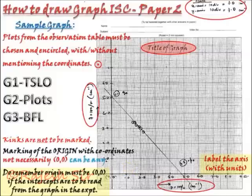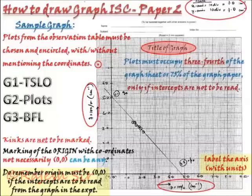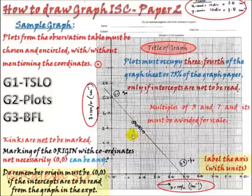So, the child has marked the origin as 0,0. If it was the slope, it could have been any origin. But in that case, the plots must have occupied the 75% of the graph sheet. But here, since you are needed to read the intercepts, so this condition of 75% is not required. And that's the reason why you can see the graph occupies only this much area. Now, the graph occupies this much area only. Another very important aspect is that while taking the scale of the graphs, ensure that the multiples of 3 and 7 must be clearly avoided.